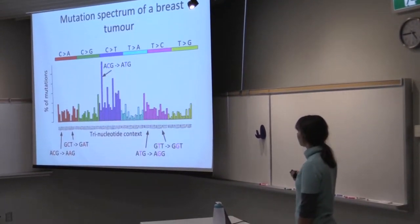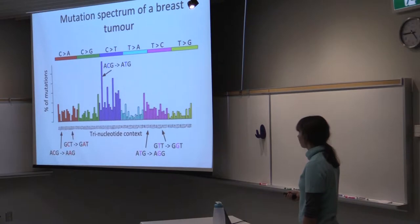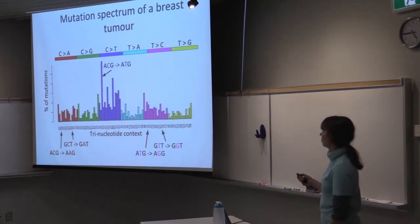We can separate mutations into 96 different types, where each type is one mutation in transition, say from C2A, and also trinucleotide context, which is B and T in this case. And this is the way to represent the mutations in the tumor.